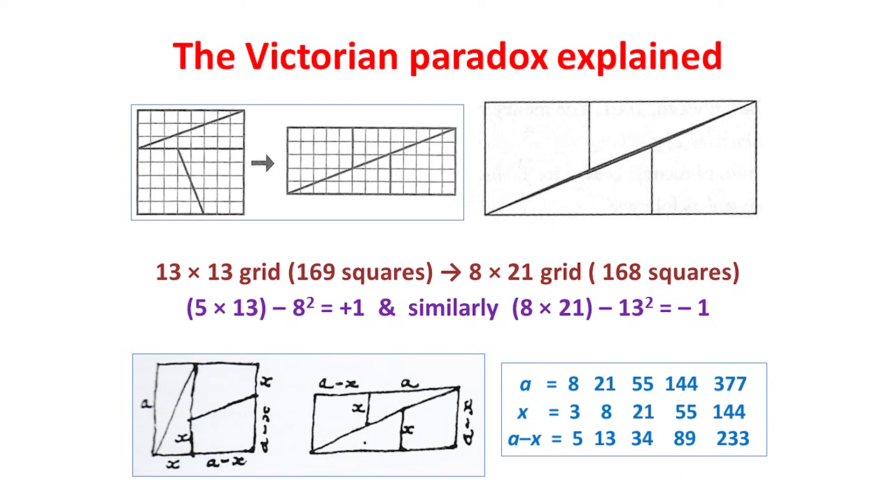But we notice that all these numbers, 5, 8, 13 and 21, are Fibonacci numbers. And for all similar examples, a single square is either added or destroyed. Below, you can see Lewis Carroll's own drawings for generating the general case, together with a table which shows the Fibonacci numbers that arise.